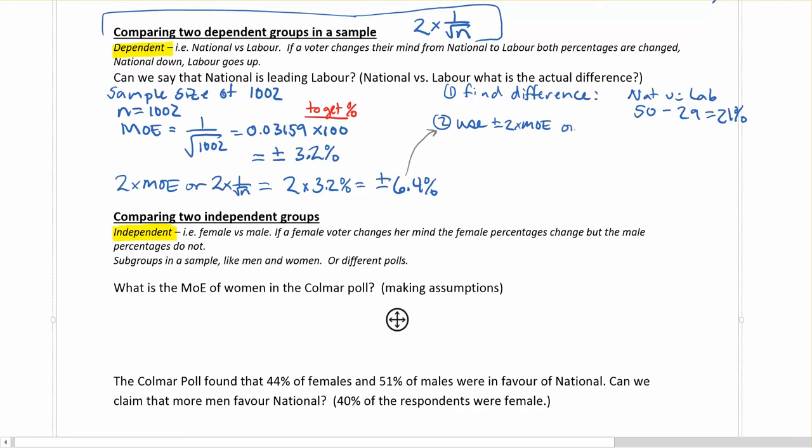We're going to apply that on the difference that we just calculated, which is this one here. If we have 21 in the middle, we need to go 21 plus 6.4 on one side, and 21 minus 6.4 on the other side. Our confidence interval here, 21 minus 6.4 to 21 plus 6.4 as our percentages, so we get 14.6% to 27.4%.